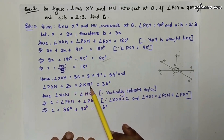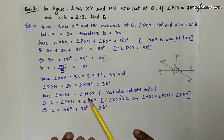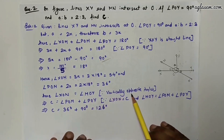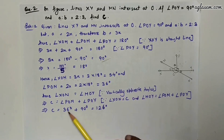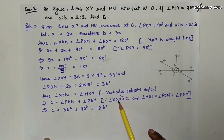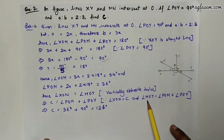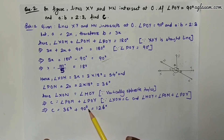Since angle XON = angle MOY (vertically opposite angles), angle C = angle POM + angle POY = 36° + 90° = 126°.